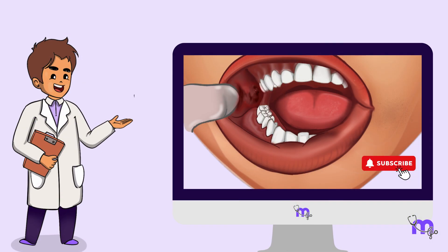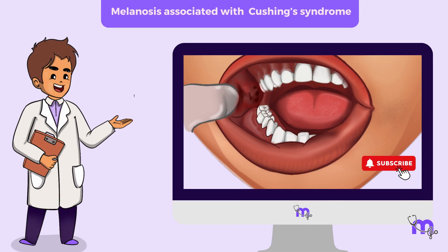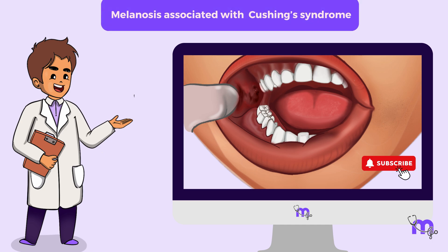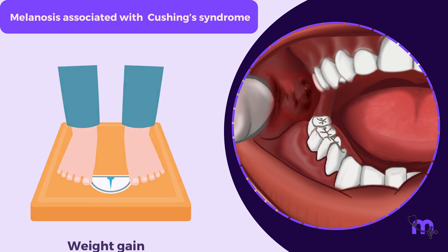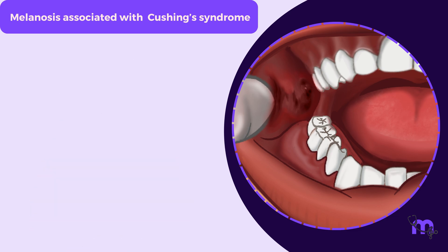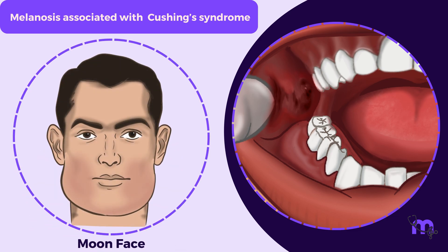The final one in our list of melanosis pigmentation is Cushing's syndrome. Here, specific systemic conditions including weight gain and the characteristic moon face are seen.